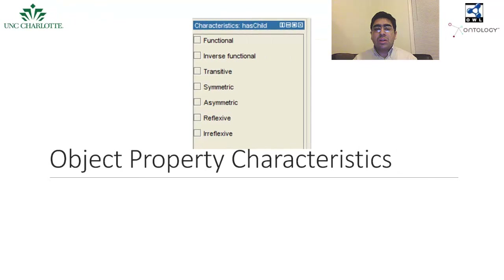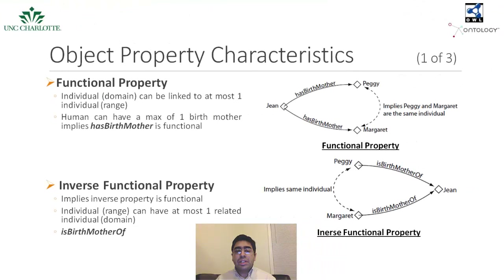OWL also allows for assigning different meanings to object properties, which are commonly known as property characteristics. If a property is functional, then for a given individual, there can be at most one individual that is linked to it using the property. The figure shows an example of a functional property has birth mother. A person can only have one birth mother. If we say that the individual Gene has birth mother Peggy, and we also say that the individual Gene has birth mother Margaret, then because has birth mother is a functional property, we can infer that Peggy and Margaret must be the same individual.